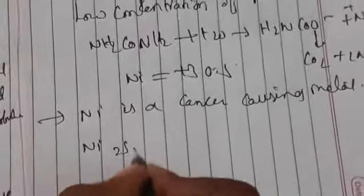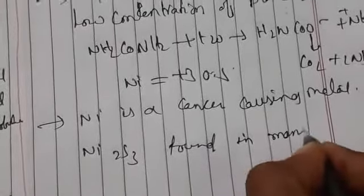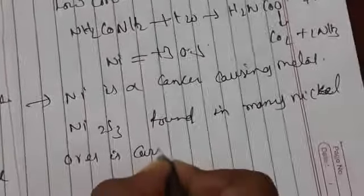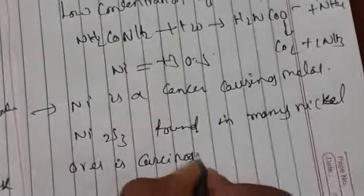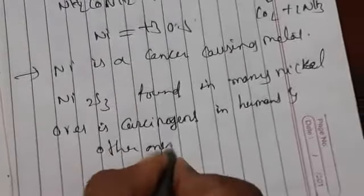Nickel is a cancer-causing metal. Ni₂S₃, nickel trisulfide, which is mainly found in nickel ores, is carcinogenic in humans.